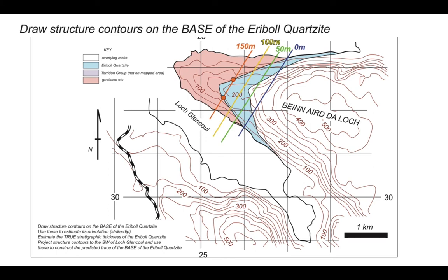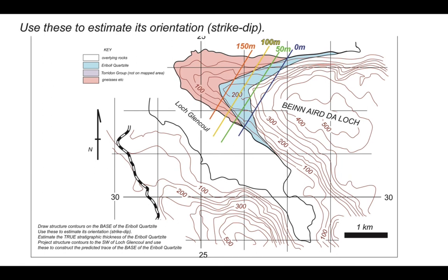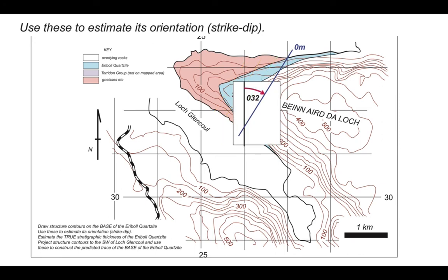We now have an array of structure contours from zero meters to 150 meters. To determine the orientation of the base of the Arable Quartzite, we can see that the structure contours are essentially parallel and equally spaced — therefore the boundary is approximately planar. It has a single value of strike and a single value for dip. The strike is simply the trend of the structure contours relative to north — it's a bearing. Taking the zero-meter structure contour, that bearing is 032, so the strike of our boundary is 032.